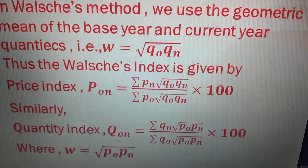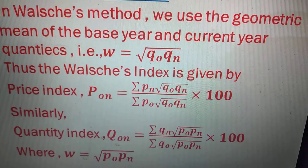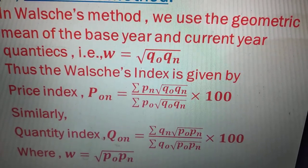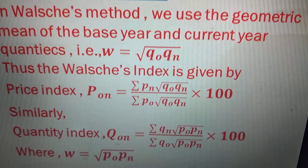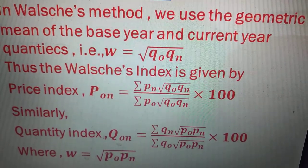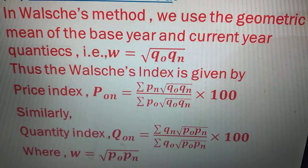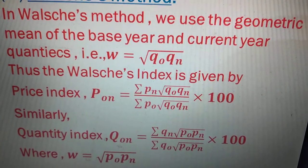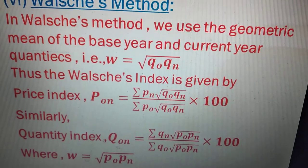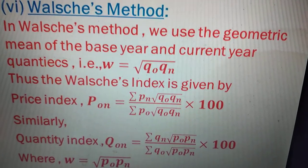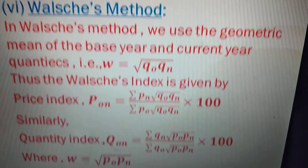The ratio is multiplied by 100, where W means root over p-suffix-o multiplied by p-suffix-n. These are the price and quantity index formulas of Walsh's method.